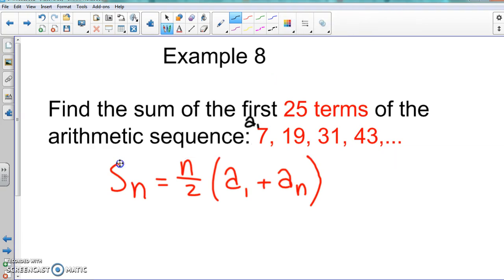So a_1 we know. Our n is 25 - this is the term we're looking for. But what is our a_n? What's our last term of the sequence? I don't know what that is.